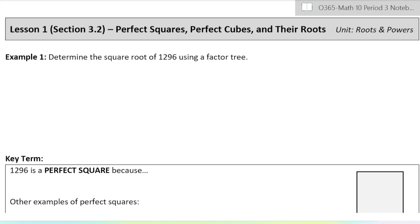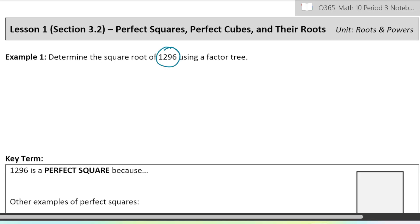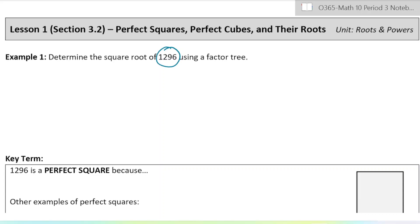This is lesson one in unit three on exponents and powers. We're doing section 3.2 today. This lesson connects unit two on polynomials and unit three on exponents and powers in a nice way. We're going to start by doing a factor tree for the number 1296 and then using that factor tree to determine the square root — what number, when multiplied by itself, gives 1296.